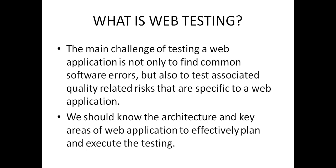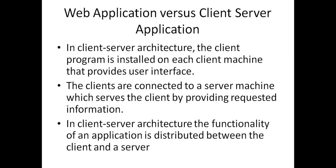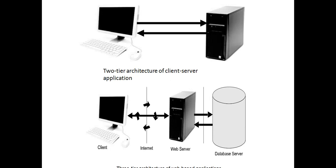We should know, before going into testing the web, what is the architecture and what are the key areas of the application to fully plan and understand the best way. Web applications work with client-server architecture. Mostly web applications are developed in the form of client-server architecture. The client program is installed on each client machine. The clients are connected to the server machine, which serves the clients by providing information. In client-server architecture, the client connects with the server. This first diagram is called client-server architecture.